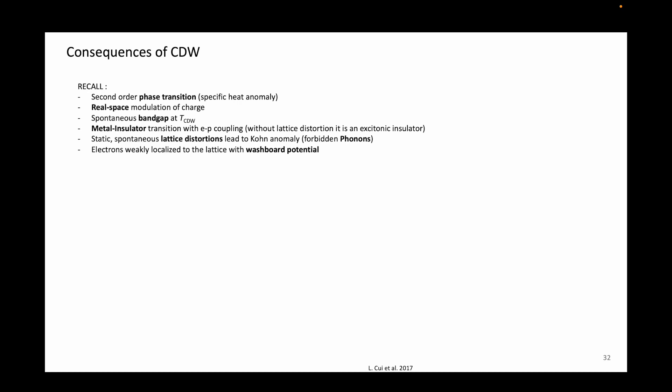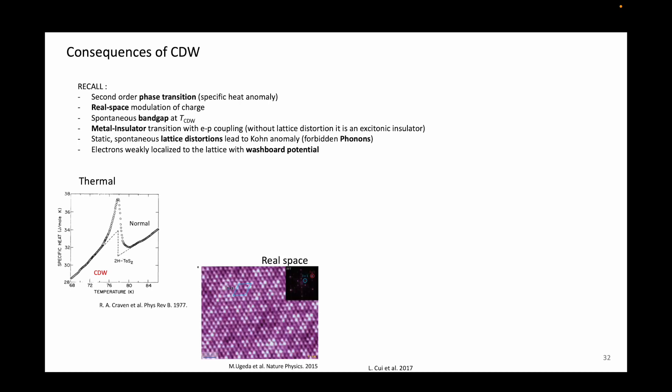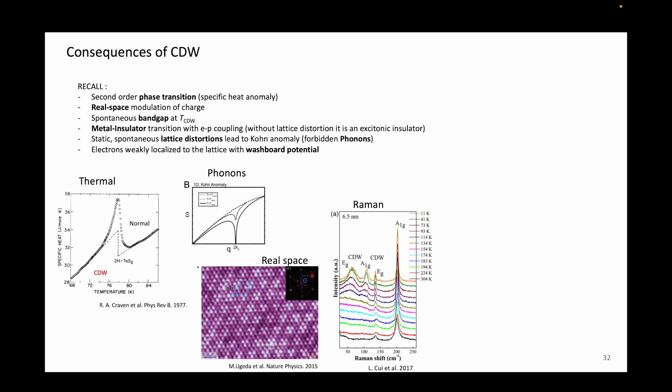Recall that charge density wave is a phase transition, so there will be a clear signature in the specific heat and the thermal expansion coefficient. It is a real space modulation of charge, so real space tunneling experiments will work. And because of this lattice distortion, some phonons will be suppressed, which means that scattering spectroscopy measurements will show clear signatures of this lattice distortion.